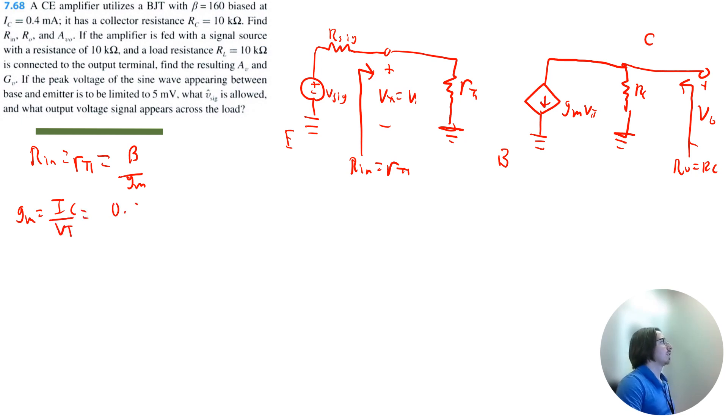So that's going to be 0.4 milliamps divided by 0.025 volts, and that's going to be 16 milliamp per volt. So therefore, rπ is equal to Rin, which is equal to 160 divided by 16 milliamp per volt.